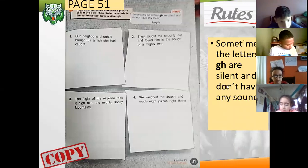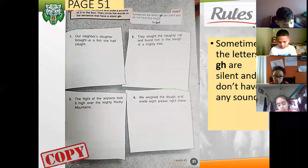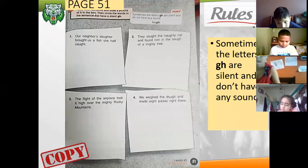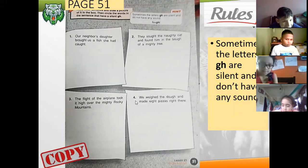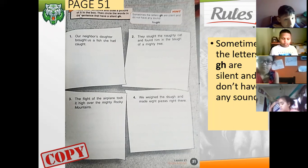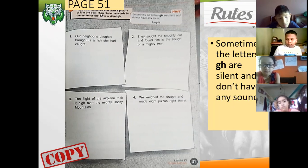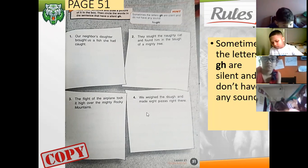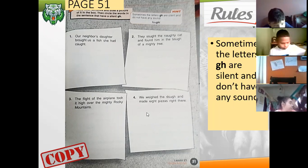So the instructions here say, read the instructions here at the beginning. Go ahead. Read each sentence and draw a picture in the box, then circle the word in the sentence that have the silent GH.